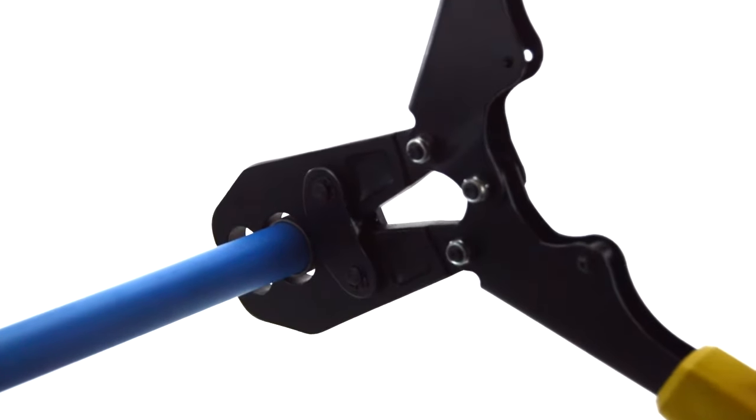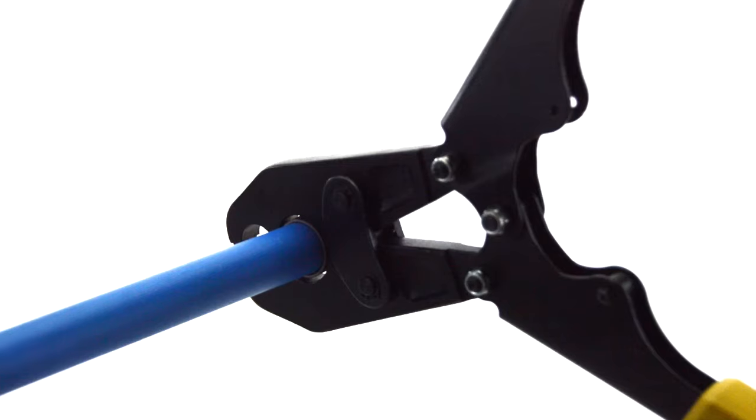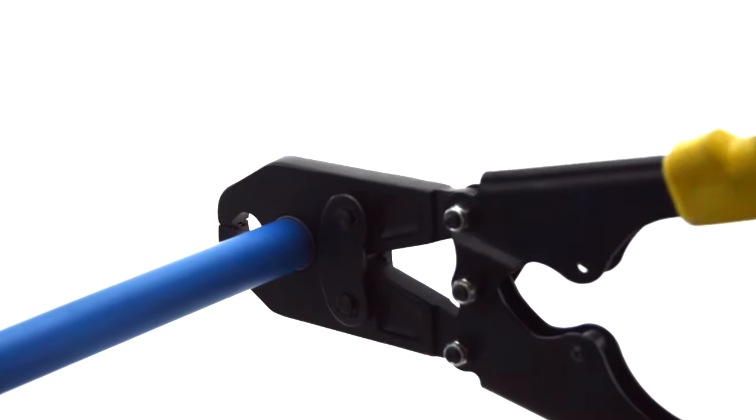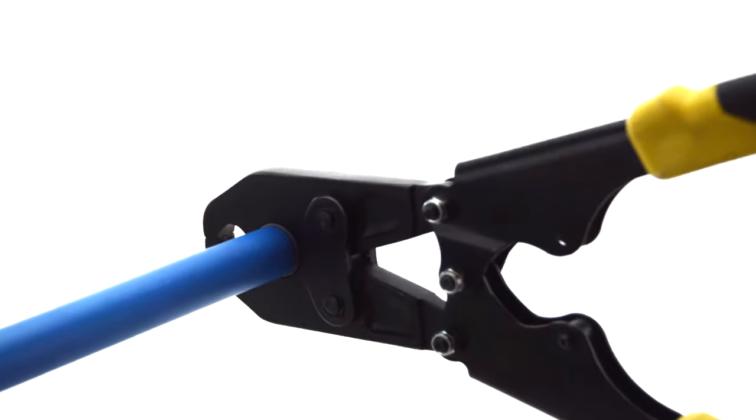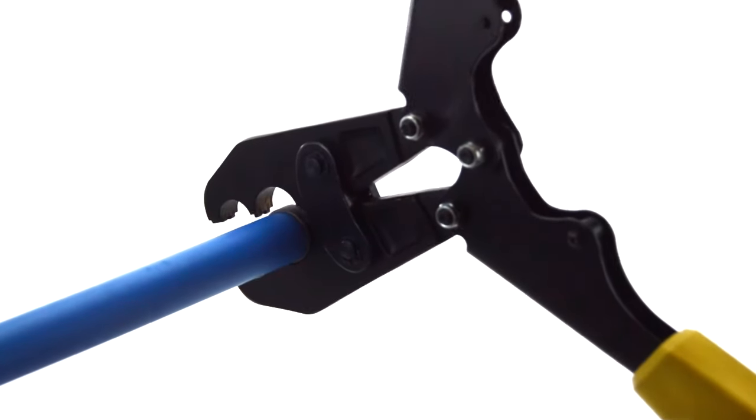Align the appropriate jaw opening around the crimp ring and squeeze the handles until fully closed. The connection is complete. To disengage the tool, simply open the handles fully.